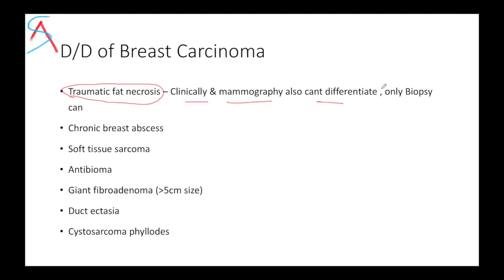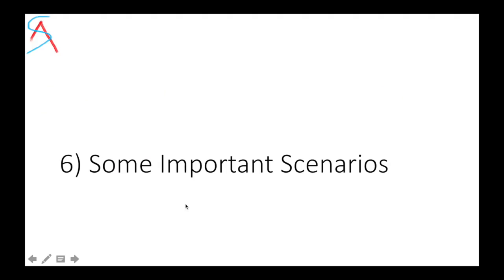Traumatic fat necrosis is very very rare. Other differential diagnoses include chronic breast abscess, soft tissue sarcoma, antibioma, or giant fibroadenoma.